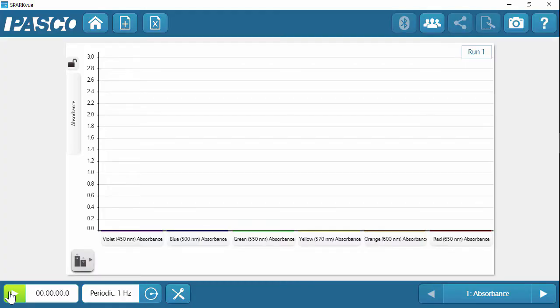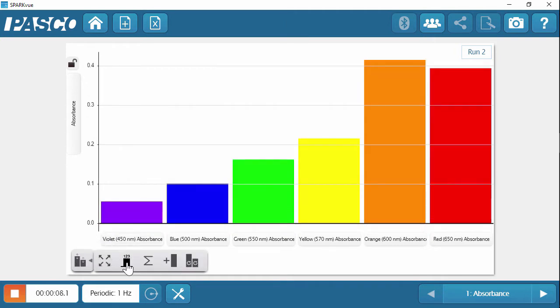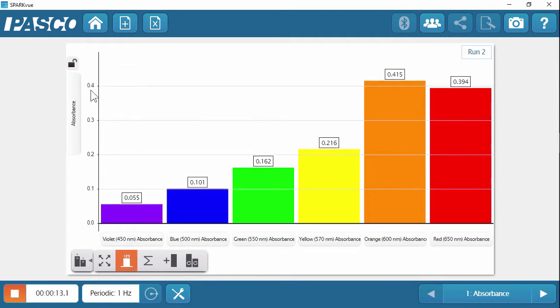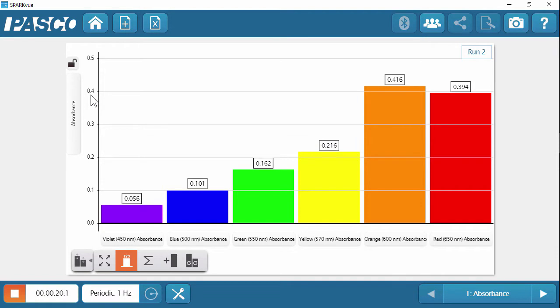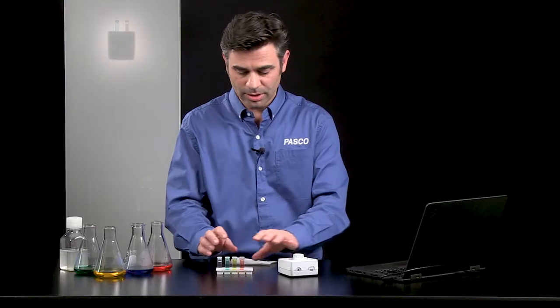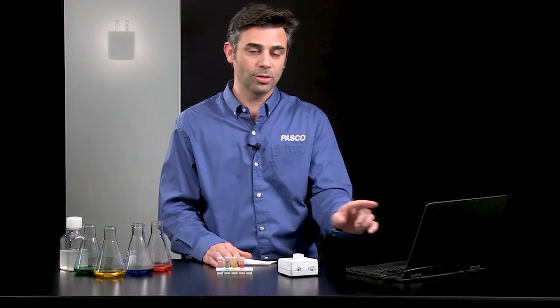And there's my blue solution. And I'm going to use a graph tool to auto scale that. And I'm going to put the number display show values onto those bars also. Now you notice something interesting, and this is a great thing to teach your students and to have them figure out. You'll notice that the blue solution does not absorb mostly blue light. It actually absorbs mostly orange light. And this is one of the things you want to teach with a colorimeter is that the complementary colors are what's important when you're talking about absorbance.